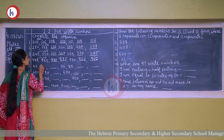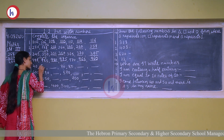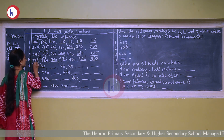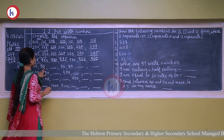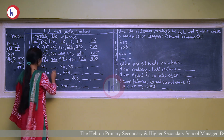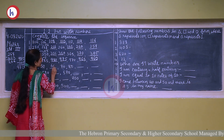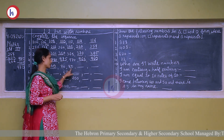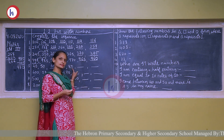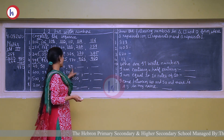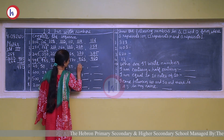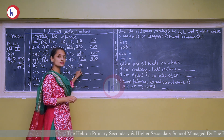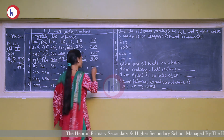40 plus 10 is 50. 50 plus 10 is 60. 60 plus 10 is 70. 70 plus 10 is 80. 80 plus 10 is 90. 90 plus 10 is 100.